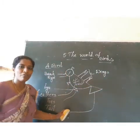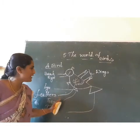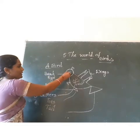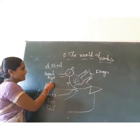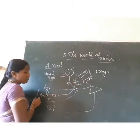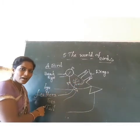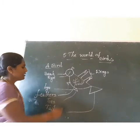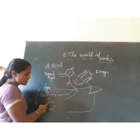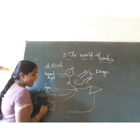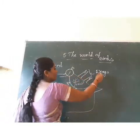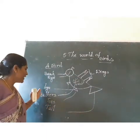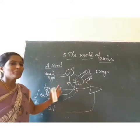So these are the parts of a bird. Come on children, let us say them. This part is the beak, this part is the eye, these are the feathers, and these two are the legs, these are the toes, this last part is the tail, and these are the wings.